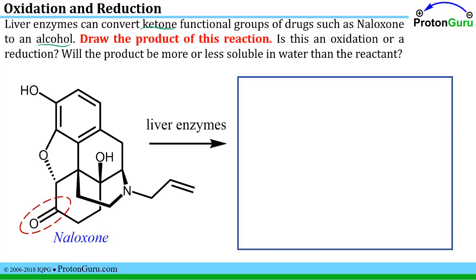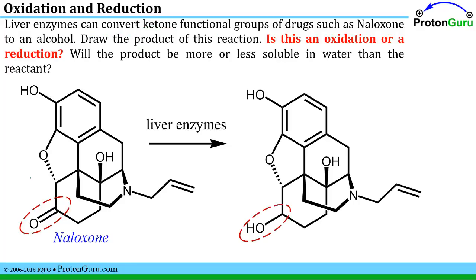We first start off by finding the ketone functional group in the starting material. We redraw the whole complicated structure, and the only thing we change is converting the ketone functional group to the new alcohol functional group.